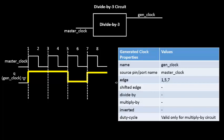We always have a secondary option that helps model the gen clock waveform in terms of the master clock. Essentially, this is all about finding a relationship between the gen clock and the master clock, and these are the options available to the designer to define that relationship.